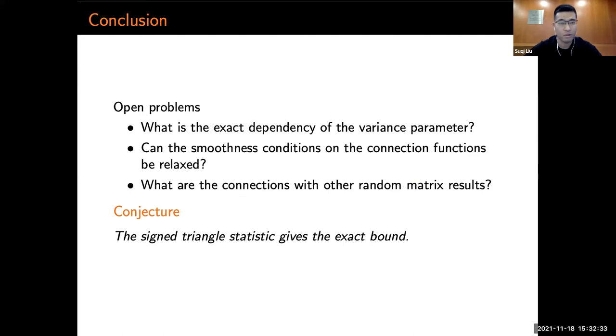For the first one, we have the following conjecture. The signed triangle statistic probably gives the exact bound. This is witnessed by various situations when the signed triangle statistic gives a sharp bound. Also, we suspect there is a factor of R-squared loss when we apply the Pinsker inequality. So I'll stop here. Thank you for your attention. I'm happy to take any questions.